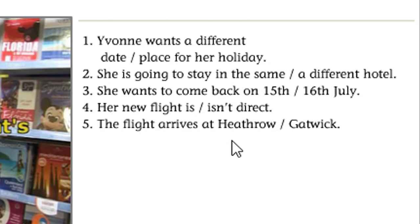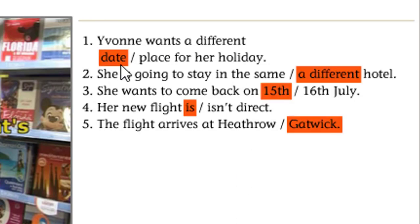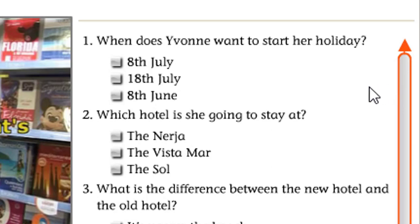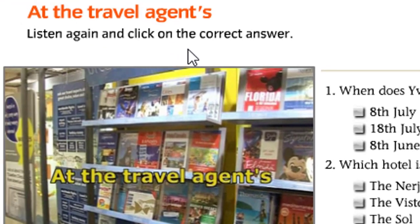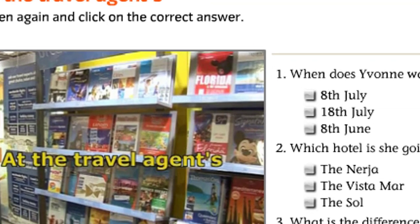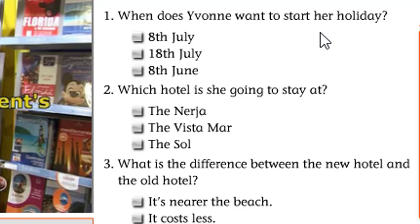والآن بعد ما قرأنا الأسئلة، سنرى الأجوبة. الأجوبة أنها كانت تريد تاريخاً مختلفاً، وأنها ستسكن في فندق مختلف، وأيضاً تعود في الخامس عشر، ورحلتها الجديدة مباشرة، والرحلة تصل إلى Gatwick. Now we'll see the answers. When does Yvonne want to start her holiday? On the 8th or 18th, or the 8th of June.